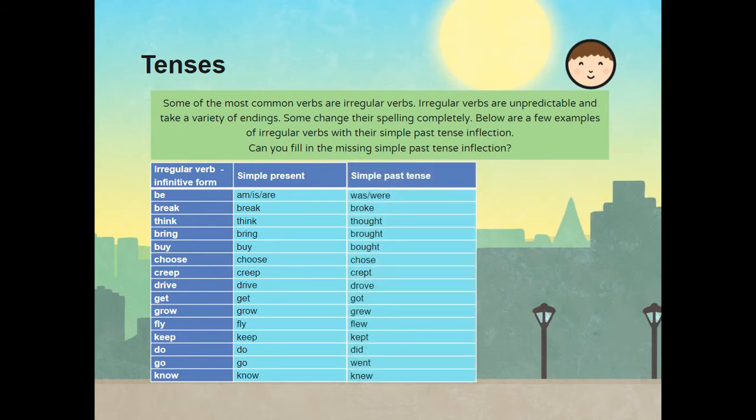In the simple past tense, these words become broke, thought, brought, bought, chose, crept, drove, got, grew, flew, kept, did, went and knew.